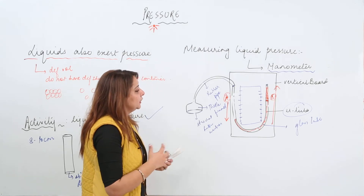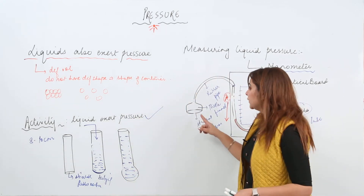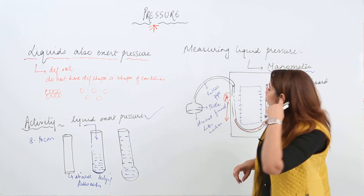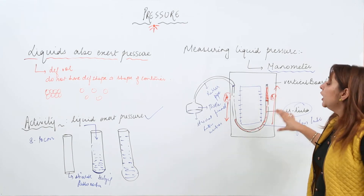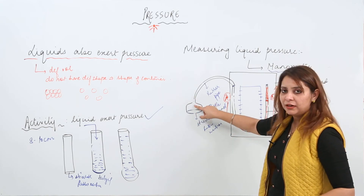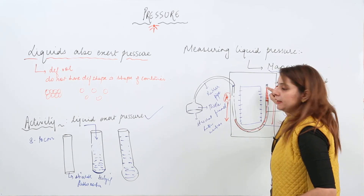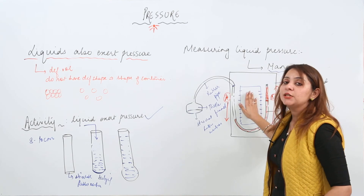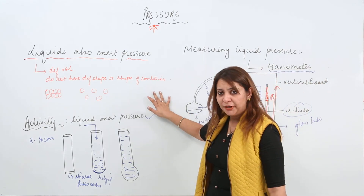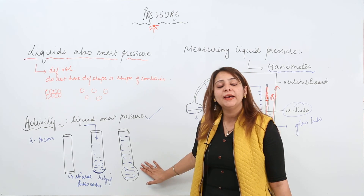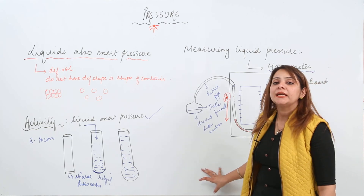The difference in liquid level between the two arms is actually the pressure exerted on the rubber membrane. Initially the level is the same on both arms. When you press the stretched rubber membrane, it exerts pressure on the trapped air, which makes the liquid move down in arm A and rise in arm B. The difference in the two levels is recorded by the scale, and that represents the pressure exerted by the liquid. So liquid always exerts pressure, and this is how a manometer demonstrates it.